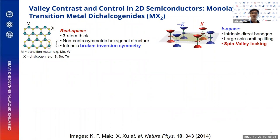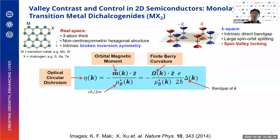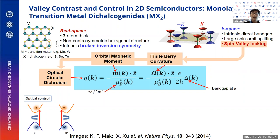How do we control or access these valley pseudospins? Theorists have proposed that this spin-valley locking in the opposite valleys provides the handle for us to access the valleys, since we know how to couple spins to external fields very well. Specifically, the spin-valley locking results in Berry curvatures of opposite signs, which are linked to the orbital magnetic moments and also to optical circular dichroism. Crucially, this spin-valley locking intrinsically found in the TMDCs allows for optical selection rules, which can independently address the valleys based on the circular polarization of light.